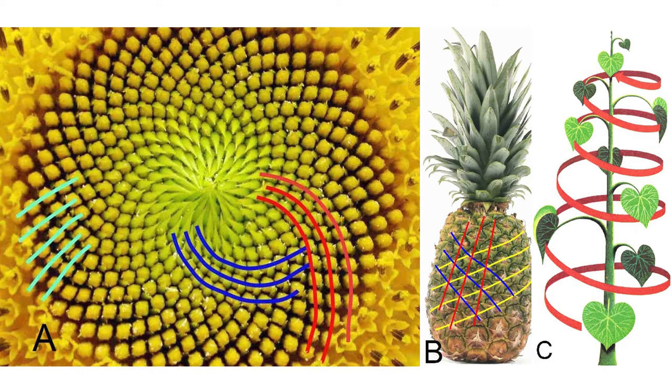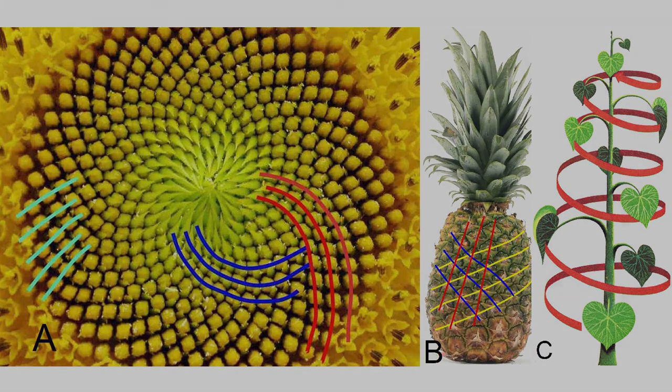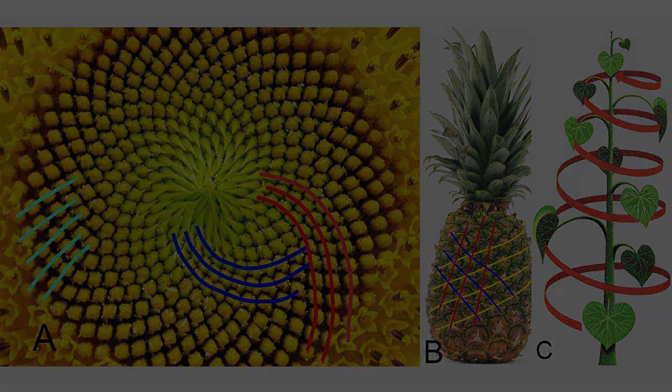The foundations of the mechanistic approach of phyllotaxis morphogenesis were laid by the Bravais brothers and then continued by Church and Levitov. It was also especially necessary to note the research of Adler who formulated the model of contact pressure.